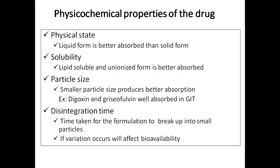The next is particle size. Smaller particle size of the drug gives better absorption compared to larger particle size. Particle size plays a vital role in the rate of absorption. A classical example is digoxin and griseofulvin, which are well absorbed in the gastrointestinal tract. Anthelmintics, on the other hand, have a larger particle size and therefore their absorption rate is poor in the GIT.